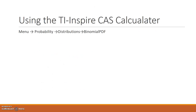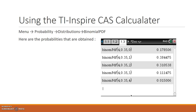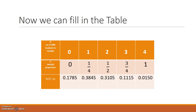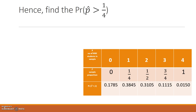Using the TI-Nspire calculator, go to Menu, then Probability, then Distributions, then Binomial PDF. The probabilities I obtained are now filled into the table under the relevant value for the sample proportion P-hat. Here's the probability that P-hat equals 1/2, substituted into the table.